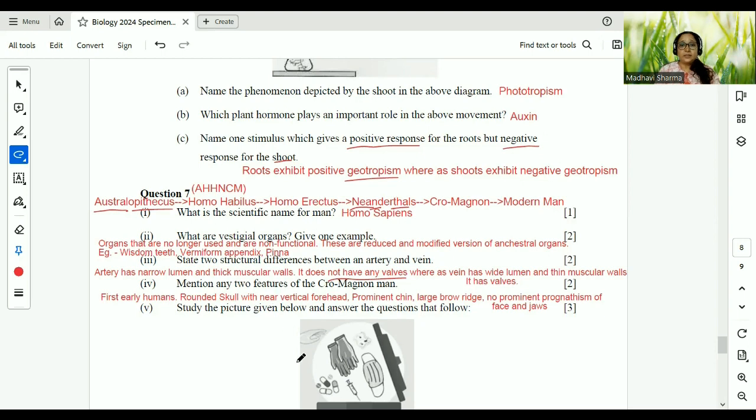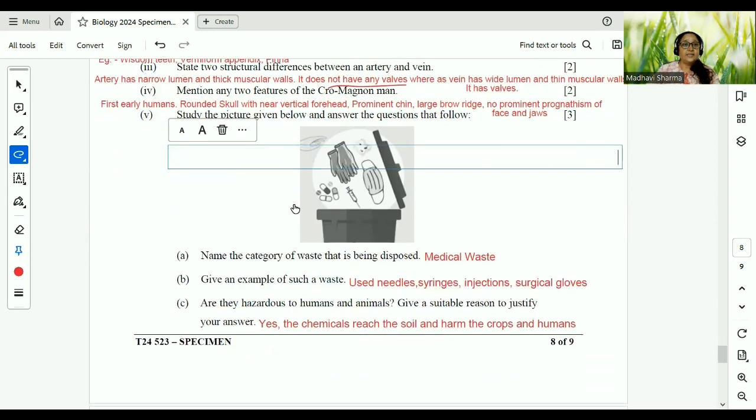Study the picture and answer the questions that follow. Category of waste, medical waste, or rather you can say biomedical waste. You can write biomedical also. It is biomedical. And give an example of such a waste. Used needles, syringes, injection, surgical gloves, dirty dressing. The dressing part. Are they hazardous? Of course. Give suitable reason. These chemicals reach the soil and harm the crops. Ultimately, they reach the humans also. It's a chemical.